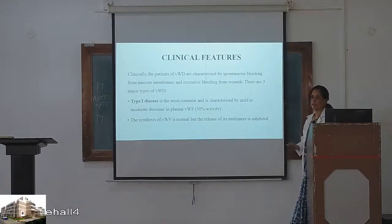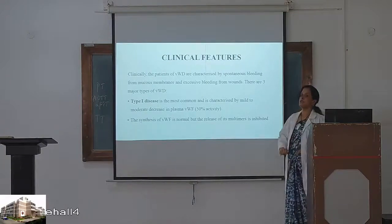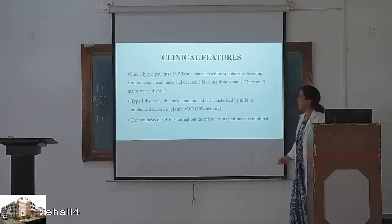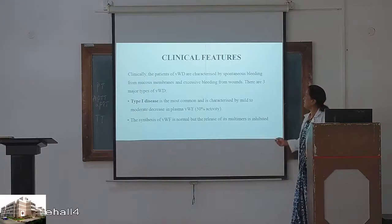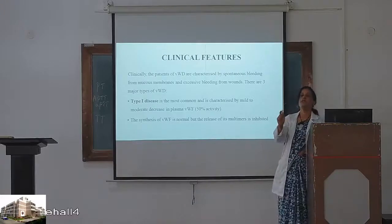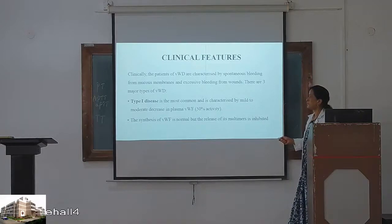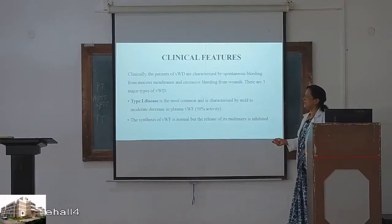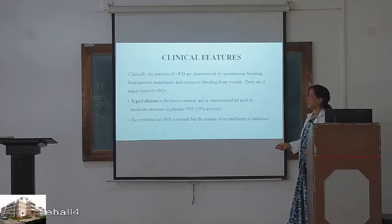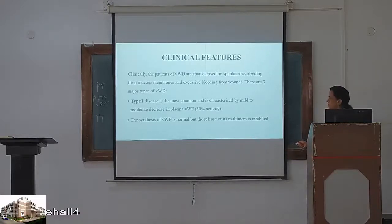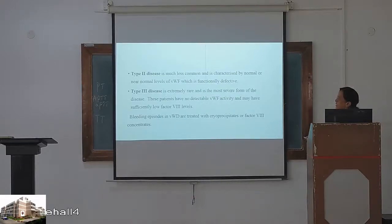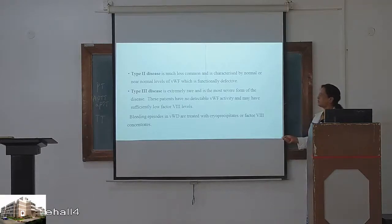Clinical features of von Willebrand disease: spontaneous bleeding from mucous membranes — they may say there is bleeding in the oral mucosa. Excessive bleeding from wounds. Many girls at puberty present with menorrhagia. Type I is most common — mild to moderate decrease in plasma von Willebrand factor with inhibited multimer formation. Type II is less common — normal or near-normal levels of von Willebrand factor but functionally inactive.